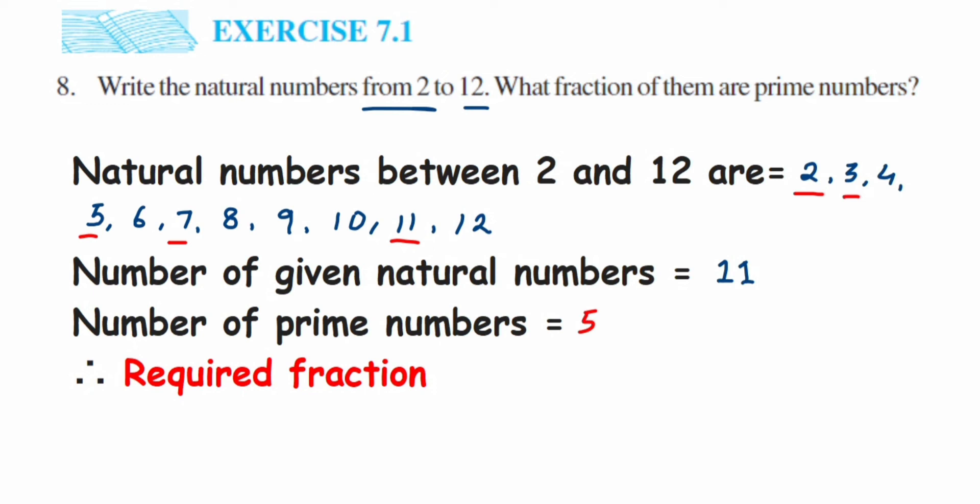Now they're asking us to write down the fraction. So total natural numbers are 11. So write down here, required fraction is nothing but—we know that fraction is nothing but a part of the whole thing. So your whole numbers, the total natural numbers we got, is 11. So out of these 11 natural numbers, there are only 5 prime numbers.